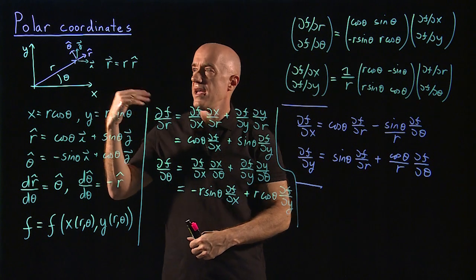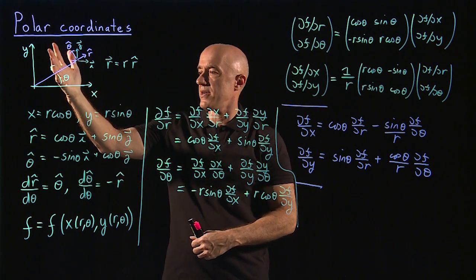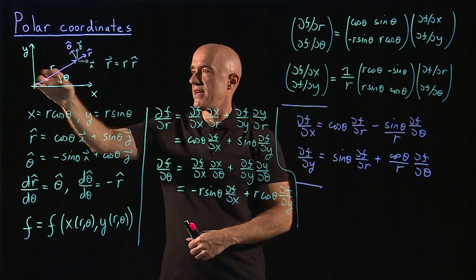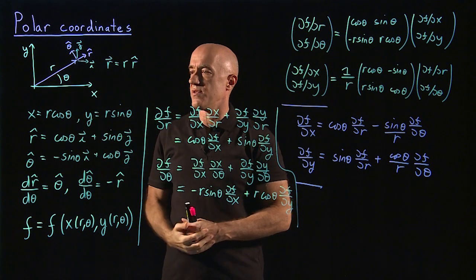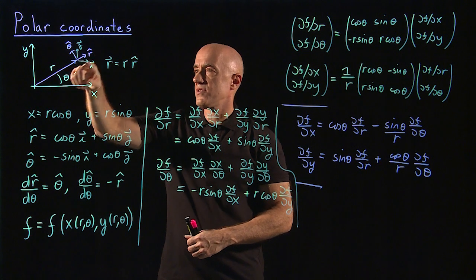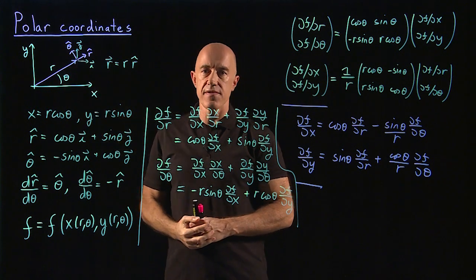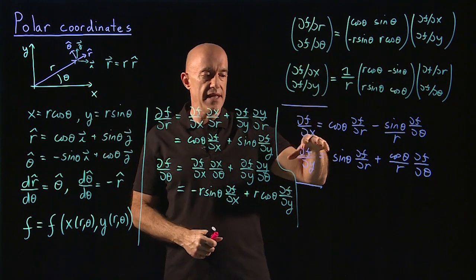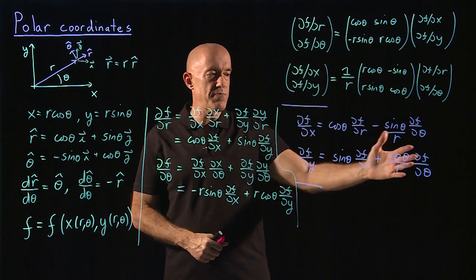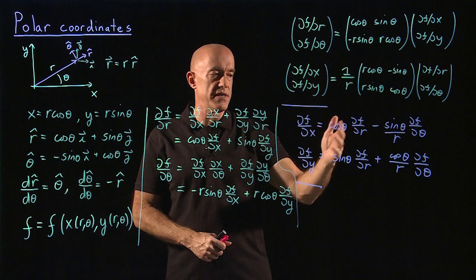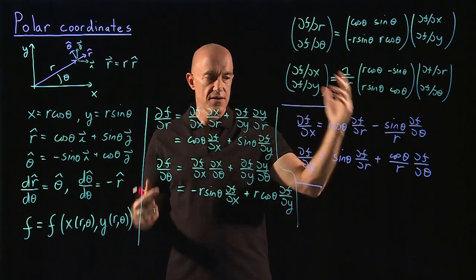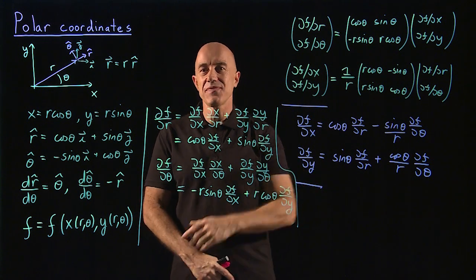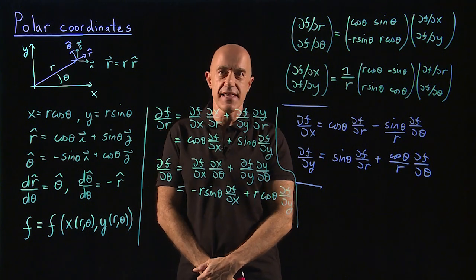To summarize: I introduced polar coordinates, where a vector is represented in terms of its length and the angle it makes with the x-axis. We have unit vectors r hat and theta hat, which are functions of theta — that's very important. I showed you how to get the d dx and d dy differential operators in terms of polar coordinates r and theta — a little bit sophisticated, and probably something you didn't do in high school. I'm Jeff Chasnov. Thanks for watching and I'll see you in the next video.